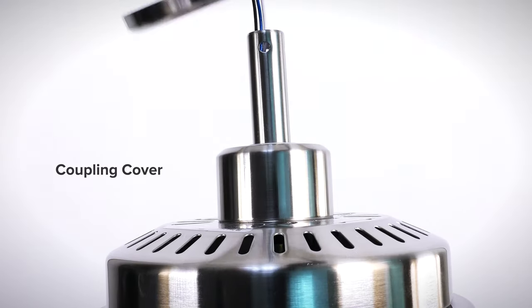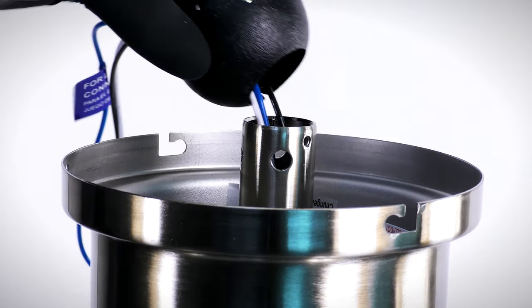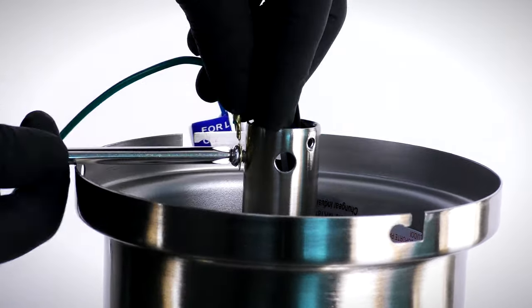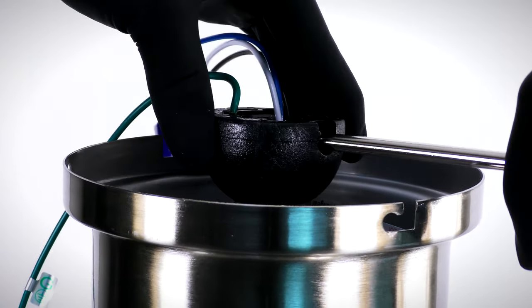Slide the coupling cover, canopy ring, and canopy over the downrod. Reinstall the hanger ball, being sure to tighten the ground lead, insert the cross pin, and secure the set screw against the side of the downrod.